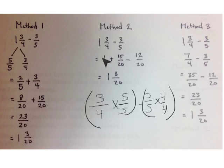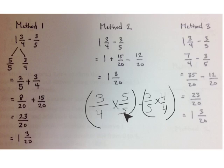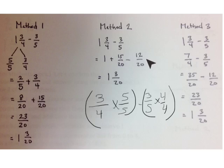Our second method is to separate 1 and 3 fourths, rename 3 fourths as 15 twentieths, getting that common unit so we can subtract 3 fifths. We took 3 fourths multiplied by 5 over 5, and 3 fifths multiplied by 4 over 4, to get a common unit of twentieths. So we have 1 plus 15 twentieths take away 12 twentieths. 15 twentieths minus 12 twentieths is 3 twentieths — same answer.